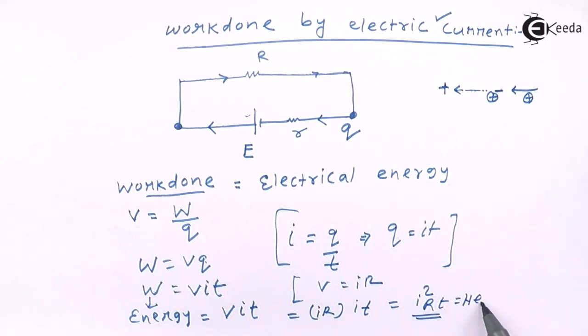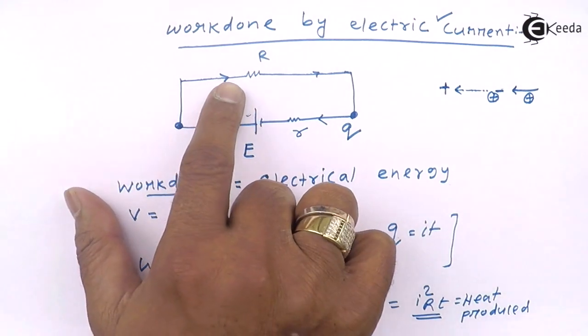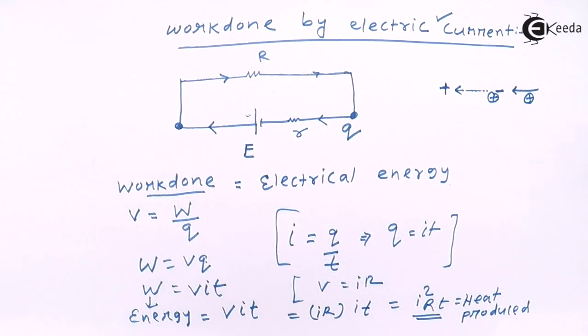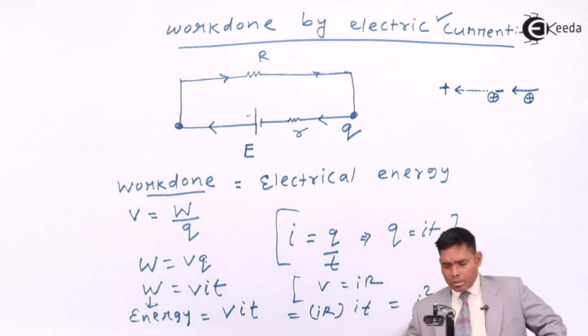This is also known as heat produced. If the conductor has resistance R or the external resistance has resistance R, it will also produce heat. This is the expression for heat: I square R T.